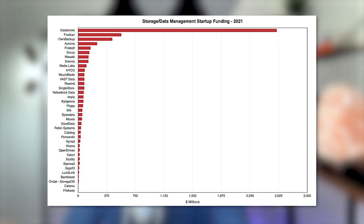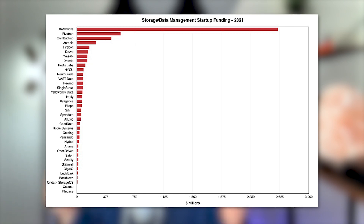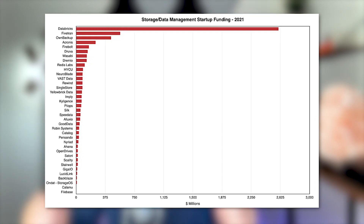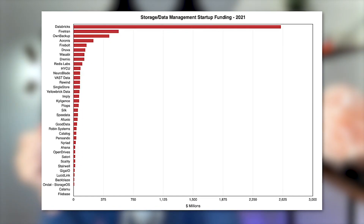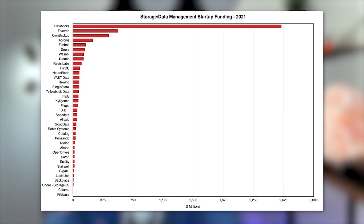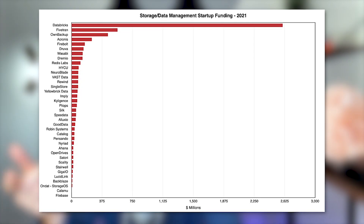If we look at this chart from blockandfiles.com, we will notice that billions have been put into the space of data storage alone. I will point out that for some reason Fivetran is on here, which doesn't make sense. But if we were to just look at data ingestion tools like Fivetran, we would also see that billions have been thrown into that space as well. So these are just two spaces in the whole data infrastructure pipeline — ingestion and storage.